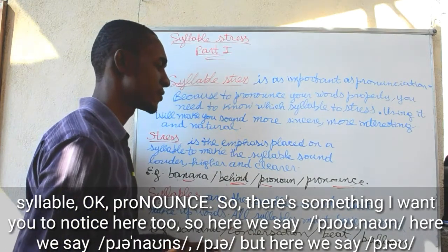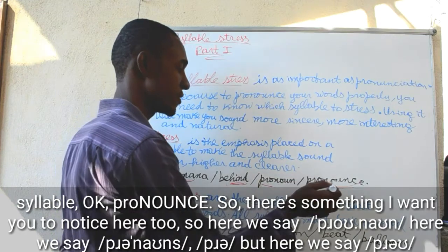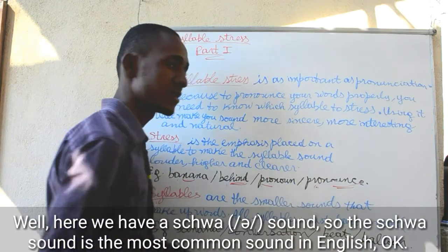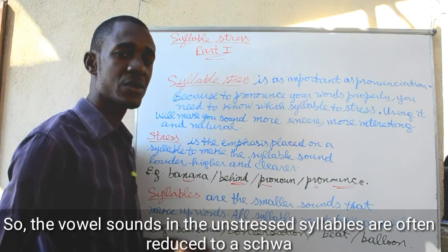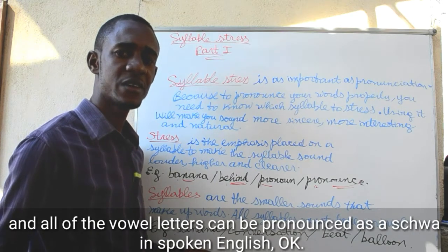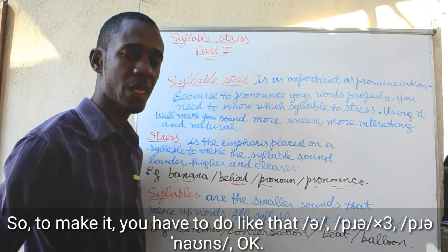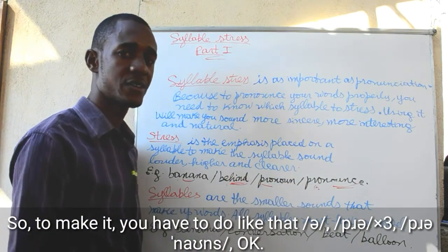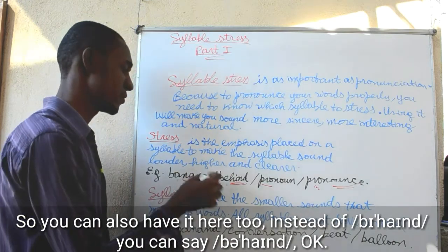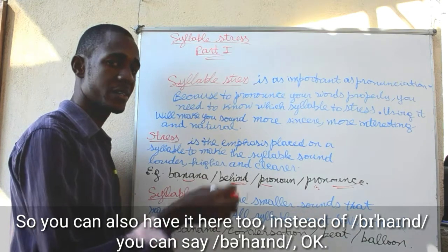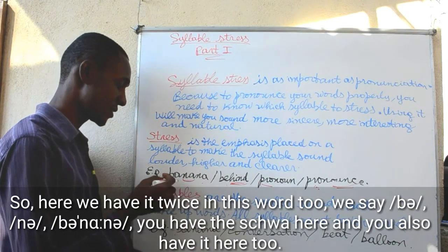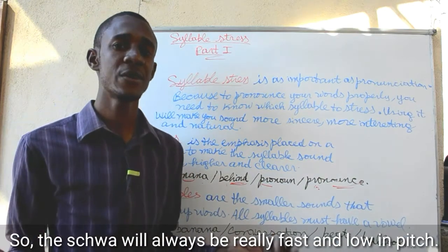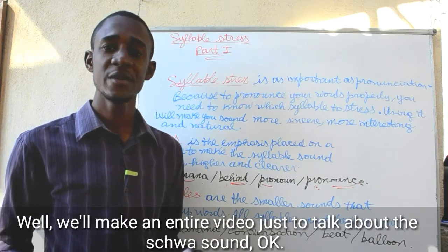There is something I want you to notice here too. We say 'PRONoun' but here we say 'proNOUNCE' — notice the first syllable changes: 'pruh', 'pruh'. This is the schwa sound. The schwa is the most common sound in English. The vowel sounds in the unstressed syllables are often reduced to schwa, and all vowel letters can be pronounced as schwa in spoken English. For example: 'pruh-NOUNCE', 'pronounce'. You can also have it in 'behind' — instead of 'be', you say 'buh-HIND'. In 'banana', we have it twice: 'buh-NA-nuh'.